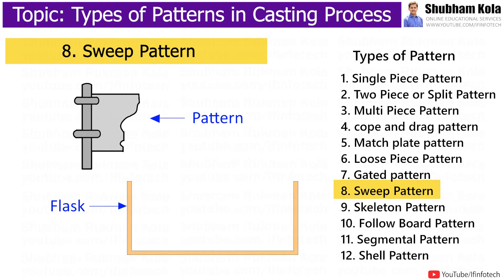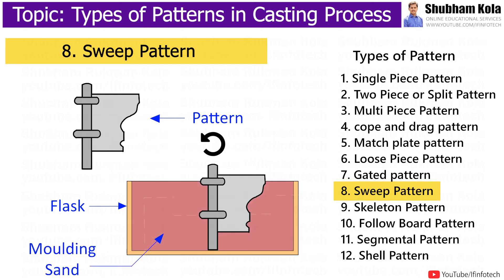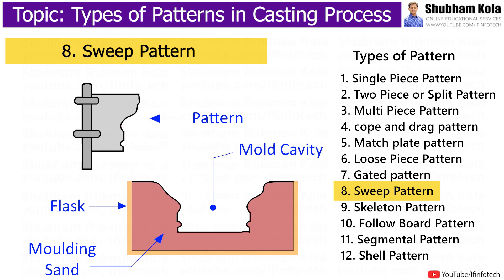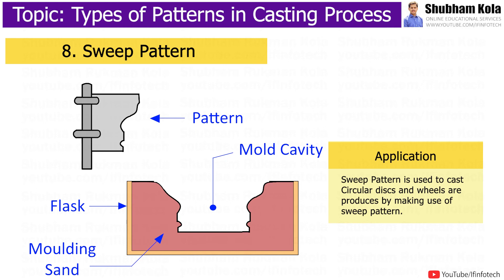In sweep pattern, the sweep is a section or board of proper contour that is rotated about an edge to shape mould cavities having shapes of rotational symmetry. This type of pattern is used when casting of large size is to be produced in short time. This pattern is used to cast circular discs and wheels by making use of sweep pattern.